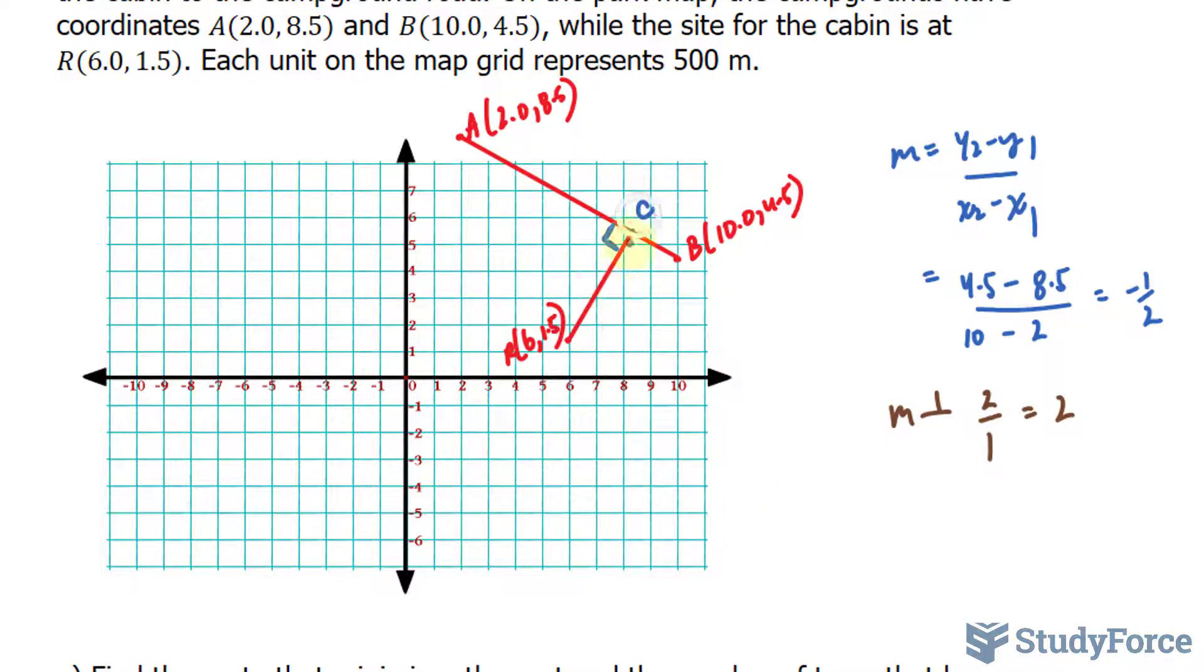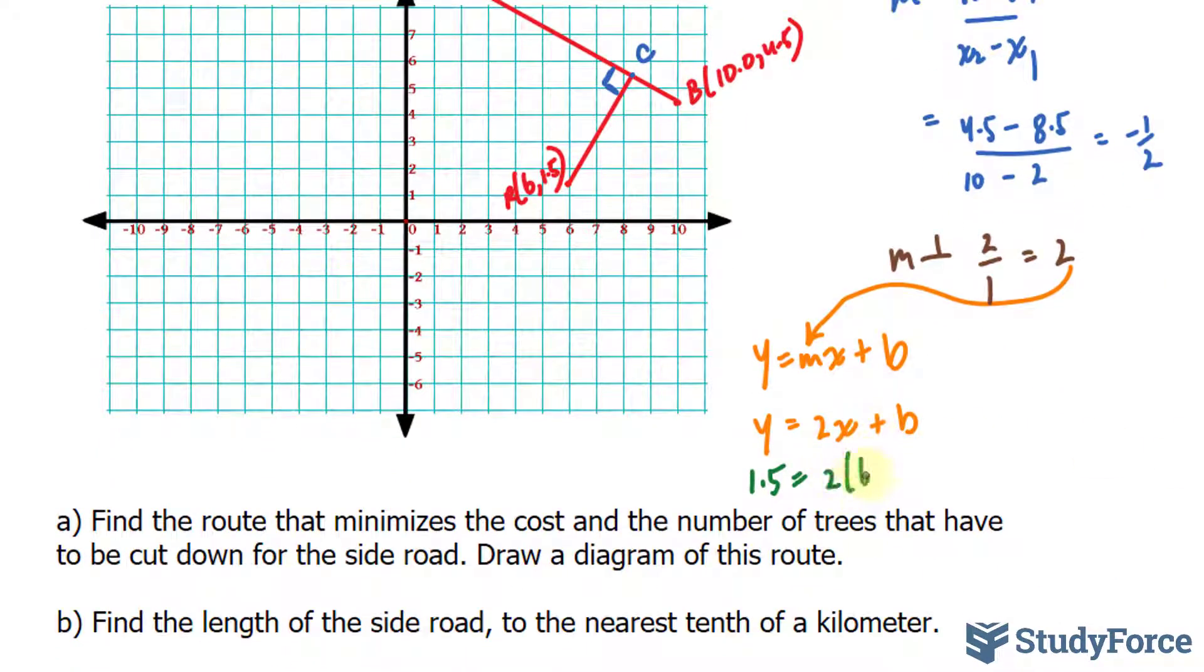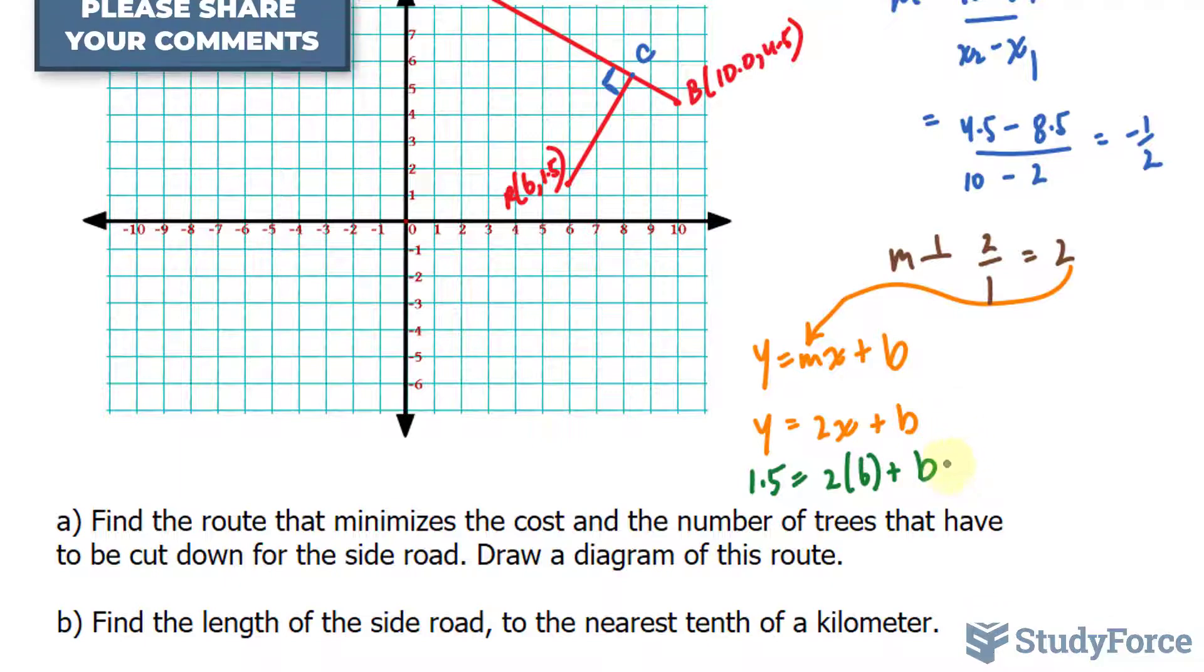So the line equation that represents RC needs to start off with y equals mx plus b. And we know its slope is 2, so I'll replace this M with 2. We have y equals 2x plus b. To find out what b is, and remember we need a complete equation for a line, that way we can find the point of intersection. To find out what b is equal to, I'll substitute the point 6 and 1.5 into my equation. So I'll substitute the 6 into the x and this 1.5 into the y. 1.5 equals 2 times 6 plus b.